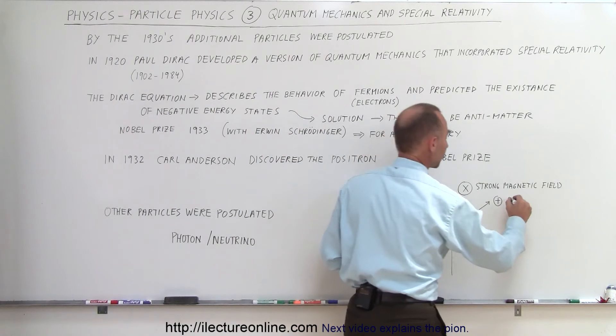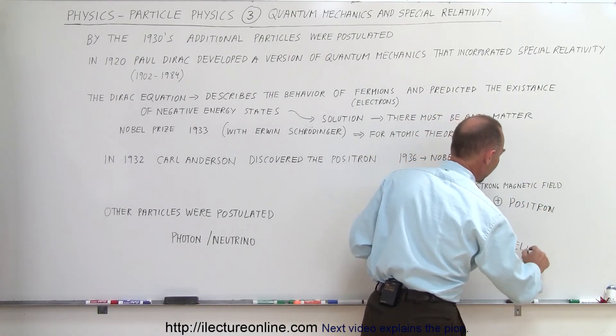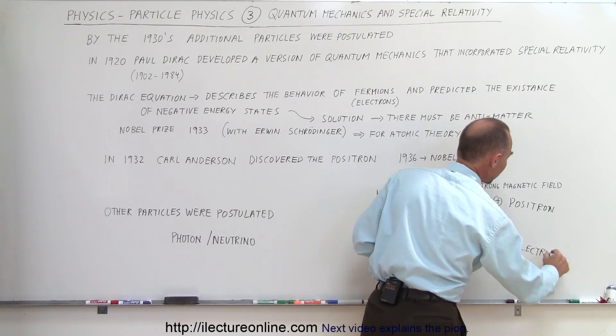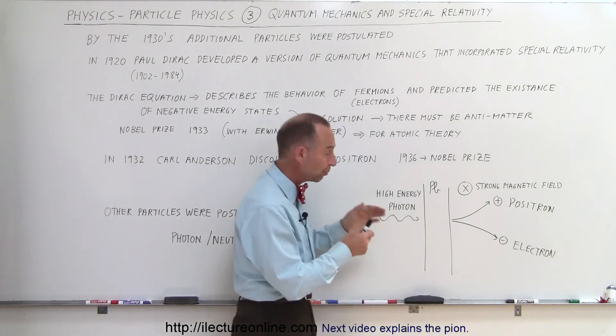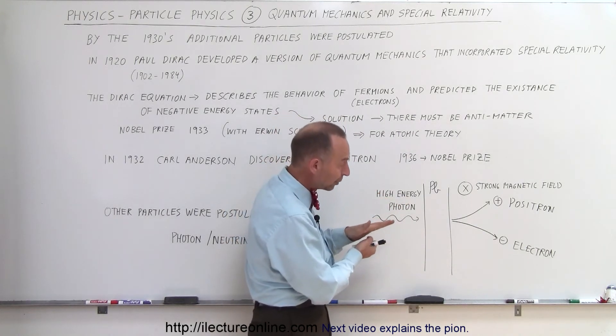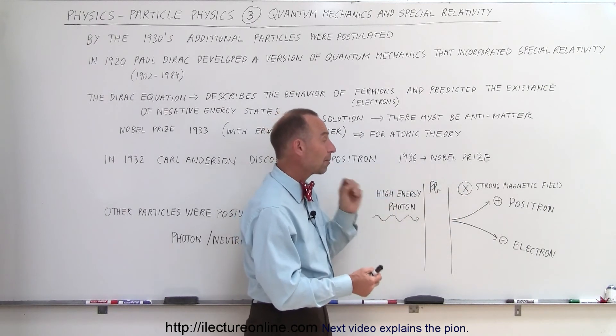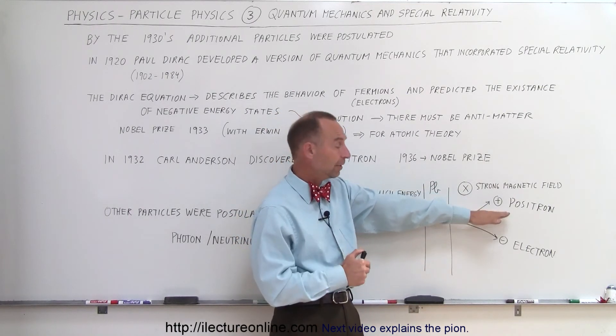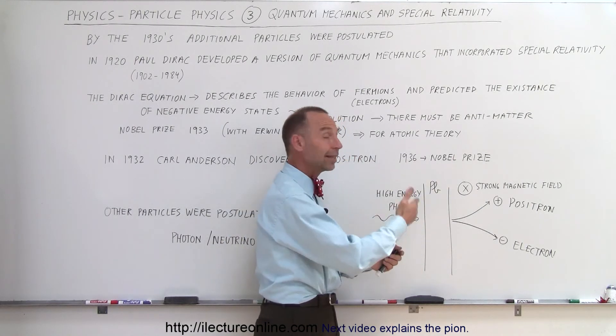This was called the positron and this was called the electron. The reason why they knew that existed is because the behavior of the two particles was exactly the same. They would assume to have the same kinetic energy, they would then have the same curvature because it would be affected by the strong magnetic field. But because one particle was positive and the other particle's negative, the positive particle would bend in one direction, the negative particle would bend in the other direction.